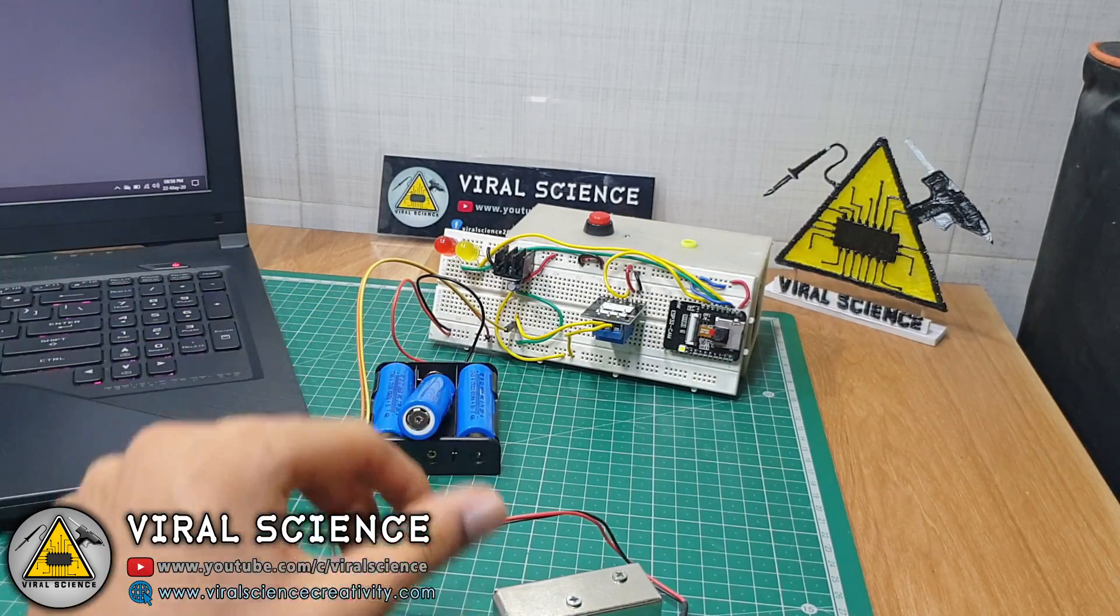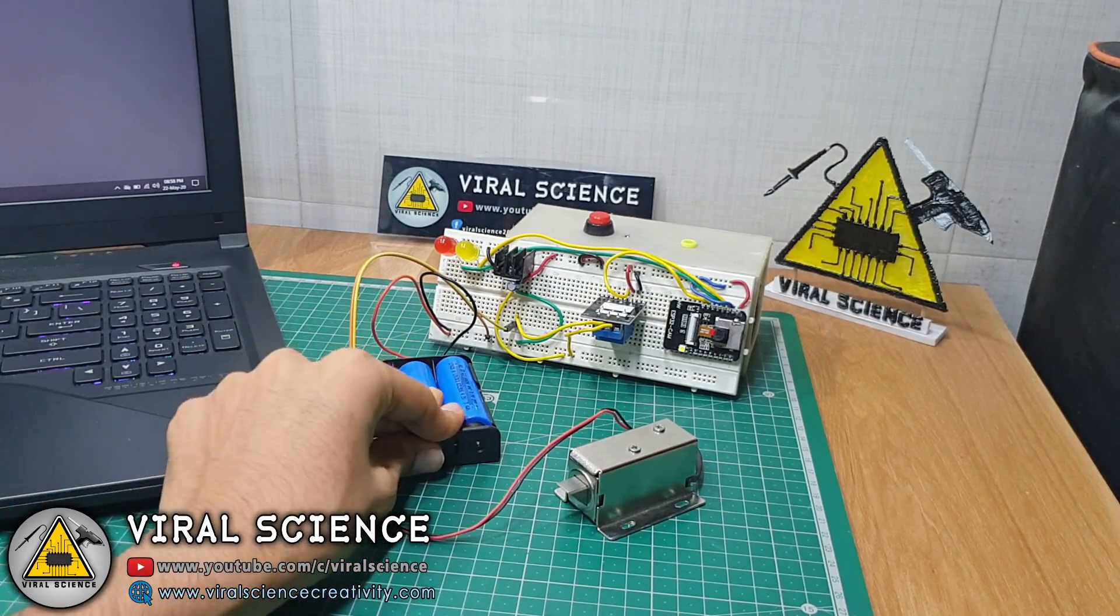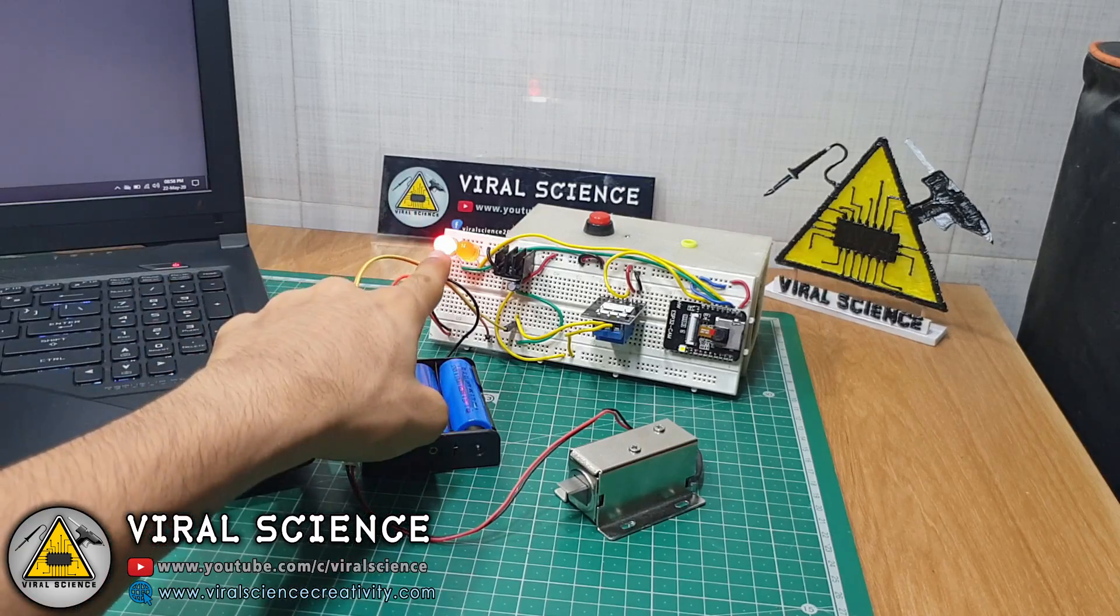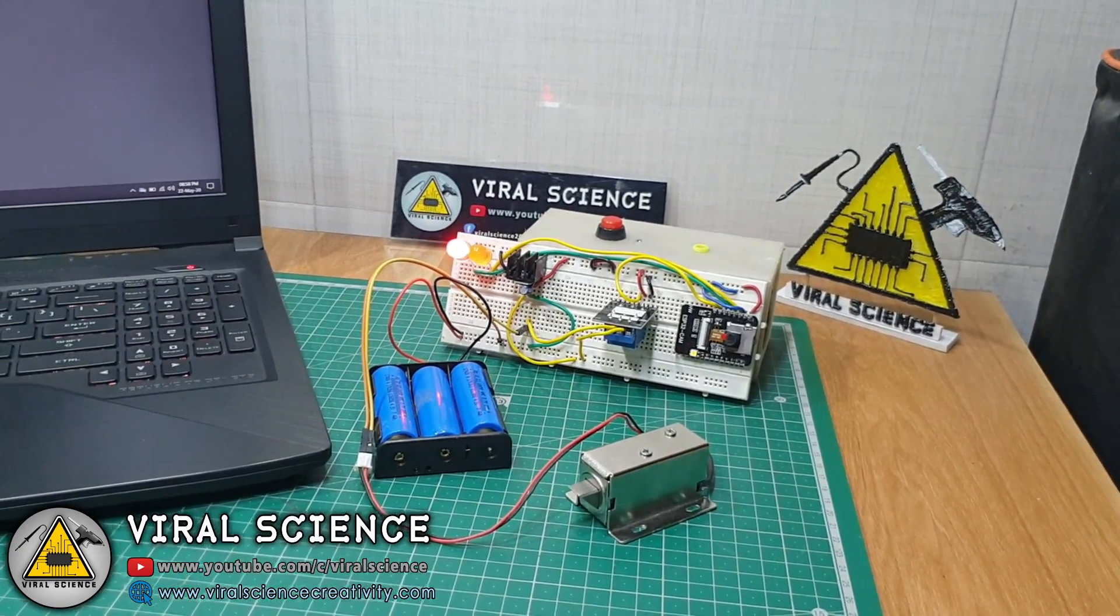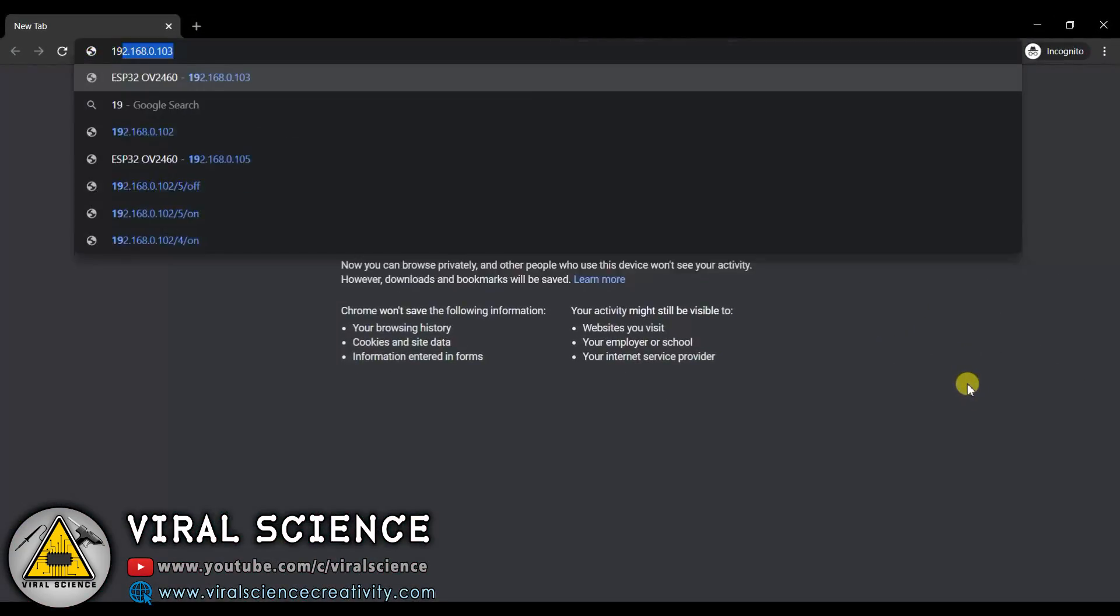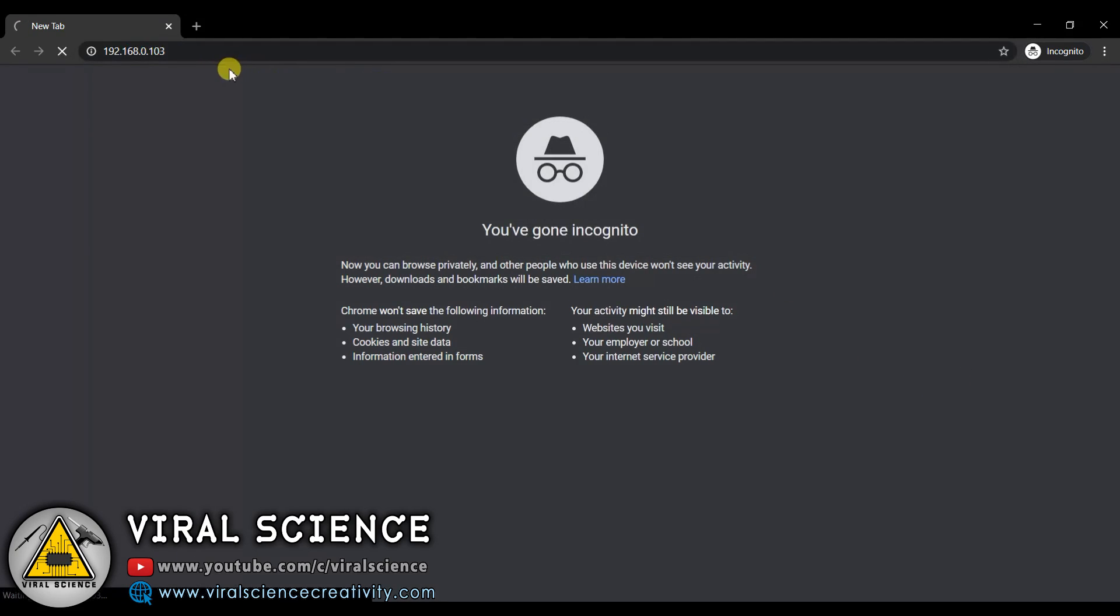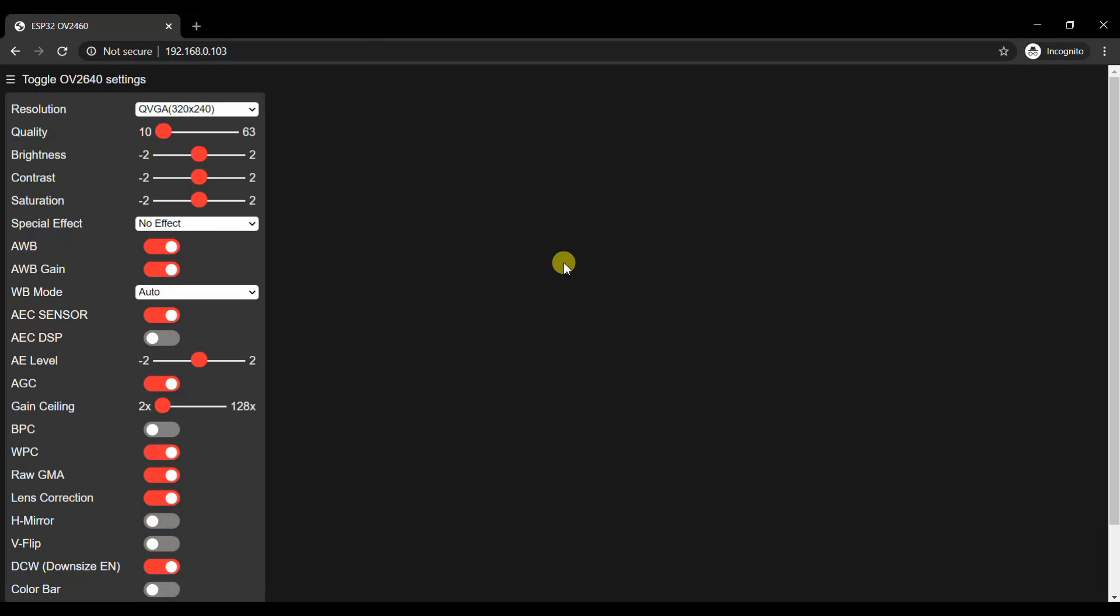Now, we'll power the whole circuit. You can see the red light, it means it's powered on. Now, we'll go to our browser and type the IP address. So, here our page is open.